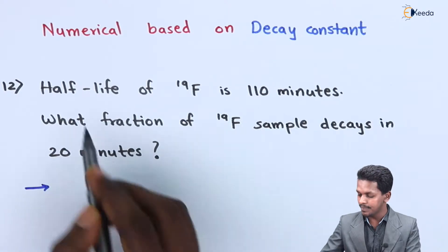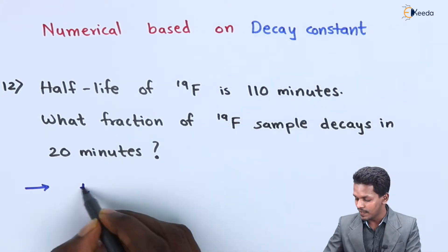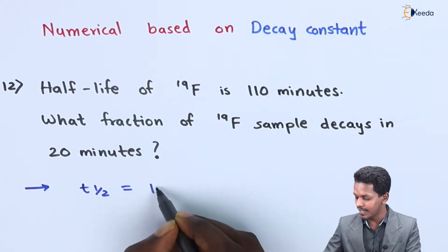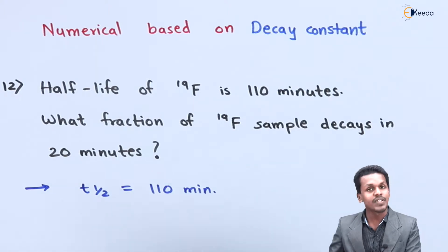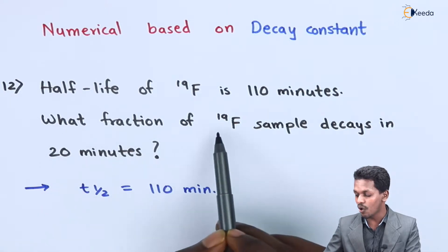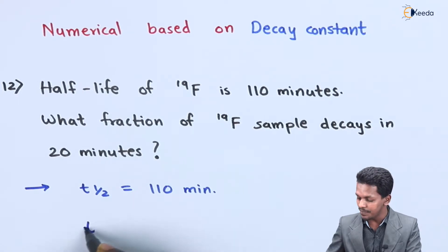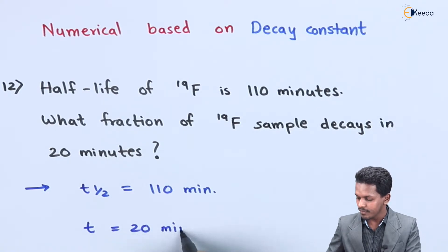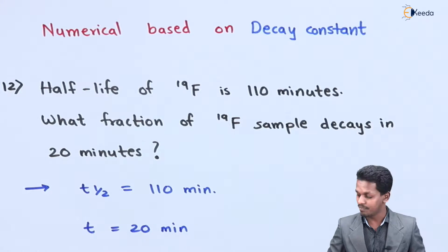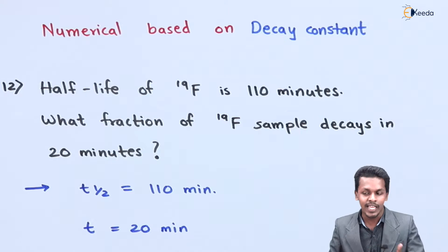The data given is that the half-life of Fluorine-19 is 110 minutes, so t½ = 110 minutes. From that, we can easily calculate the decay constant lambda. The question asks what fraction of the Fluorine-19 sample decays in 20 minutes, so the time t = 20 minutes is also given.